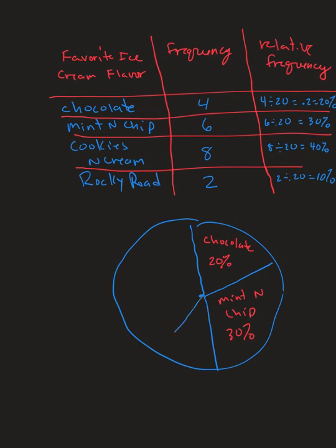And then lastly, the smallest piece, which is Rocky Road, is 10%. And that's how we make a pie chart. So notice, for the pie chart, we didn't really use the frequency. We only used the frequency to calculate the relative frequency, because that's what we need to make the pie chart. We need the relative frequency, or the percent. And there you go.